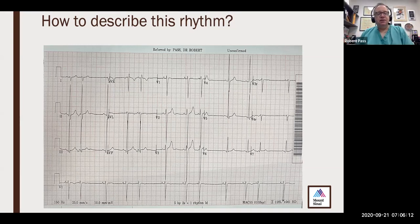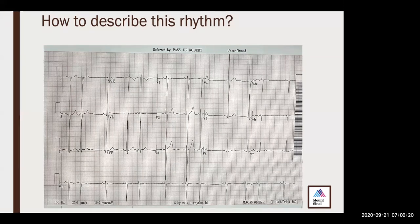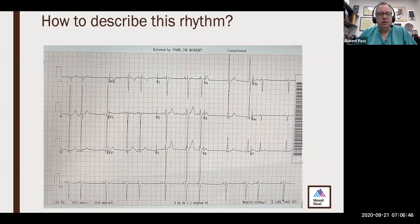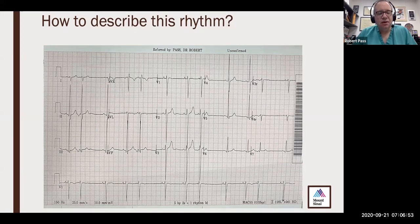That is correct — this is some sort of atrial trigeminy. Do you want to hazard a guess as to where this focus might be coming from? If we look at the axis of the P wave, it's positive in lead one, negative in leads two and three. So I would say lower right atrium. That's right — it's probably coming somewhere in the low atrium because it's an inverted P wave in the inferior leads. We would anticipate it's coming somewhere low in the right atrium, moving away from that area, hence a negative P wave.